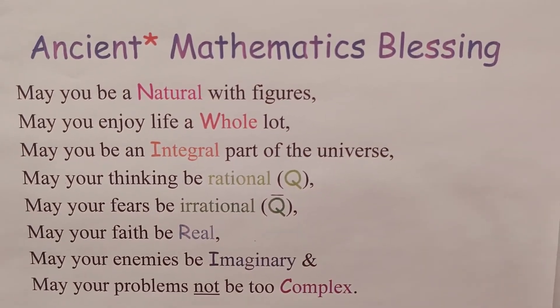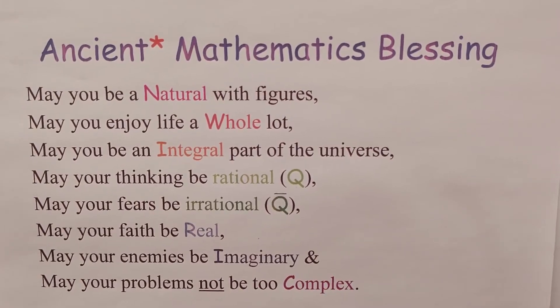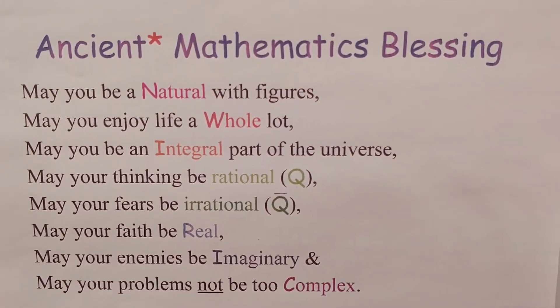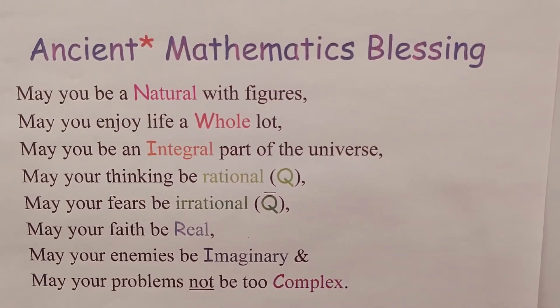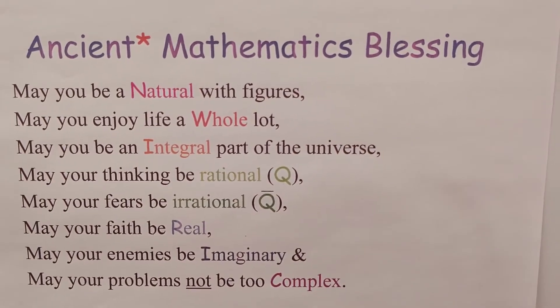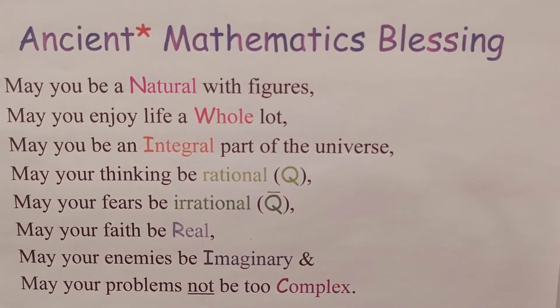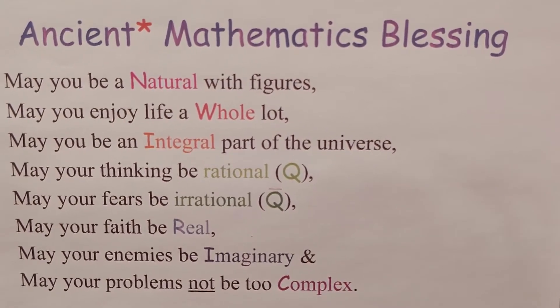Of course the blessing is based on the different types of numbers or sets of numbers: the natural numbers, the whole numbers, the integers, the rationals, the irrationals, the reals, the imaginaries, and the complex ones.